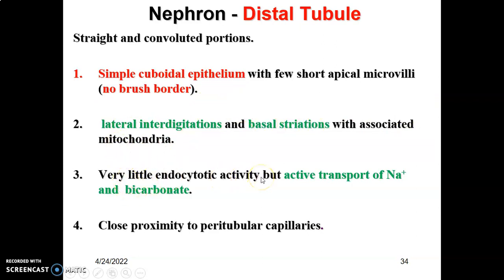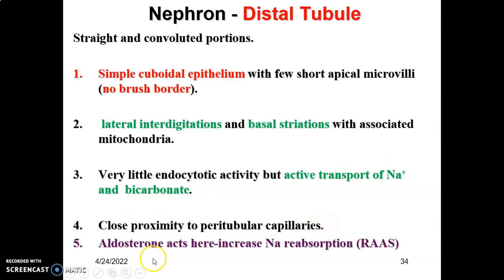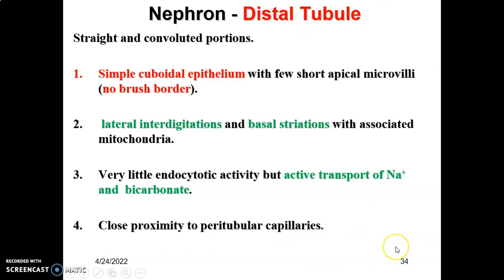The DCT has very little endocytic activity, unlike the PCT where we saw endocytic vesicles. Of note is that the DCT has active transport of sodium and bicarbonate and close proximity to the peritubular capillaries. DCT cells respond to aldosterone, which causes an increase in sodium reabsorption at the distal convoluted tubule, following the renin-angiotensin-aldosterone system.